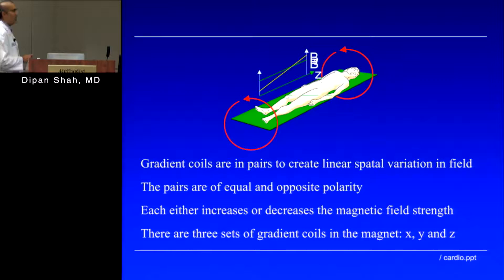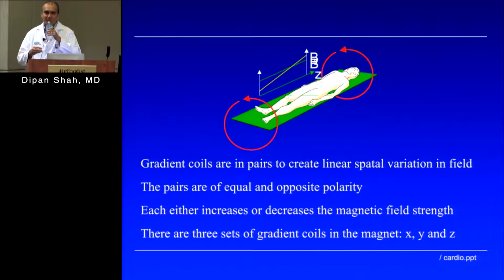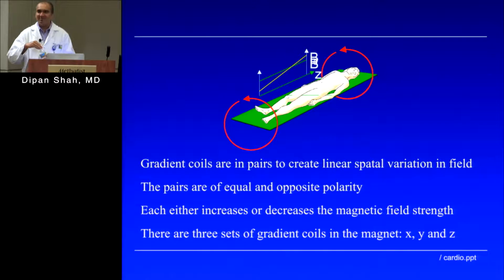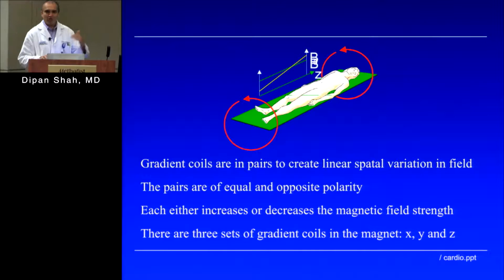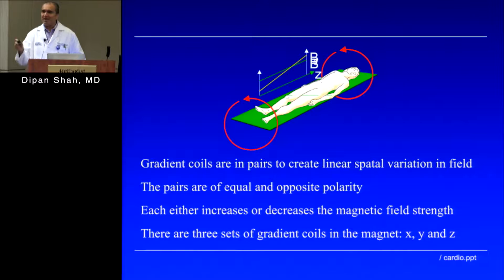What is the purpose of the gradients? Gradients cause a local alteration to the magnetic field. The static magnetic field stays at 1.5 tesla, but I can cause a slight distortion to the magnetic field by applying a gradient — for example, in the head-to-foot direction. The net effect is that the magnetic field at the head will be slightly different than at the center versus at the feet. We're talking about very minor changes: maybe 1.5001 tesla at the head and 1.4999 tesla at the feet.